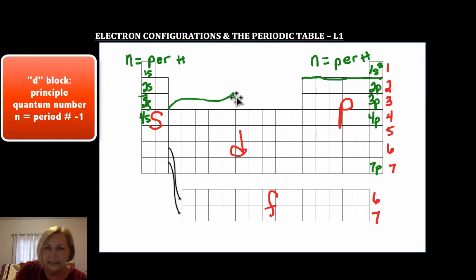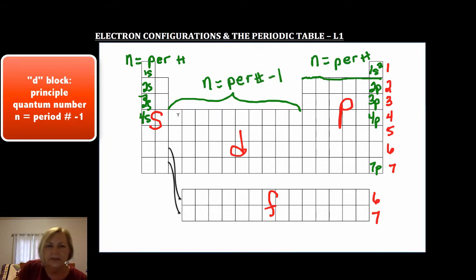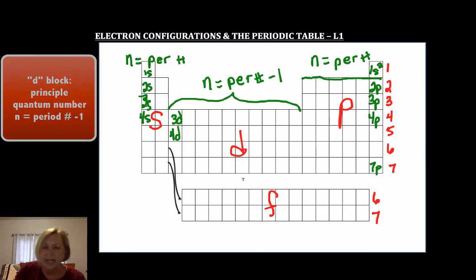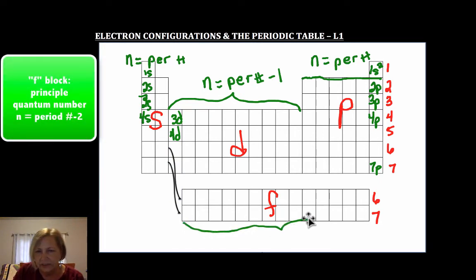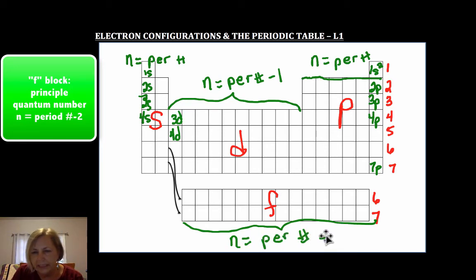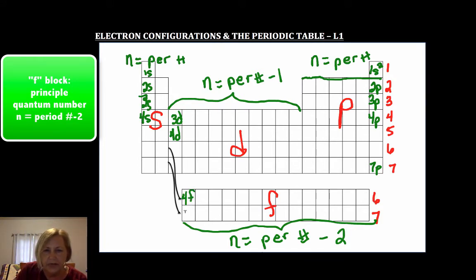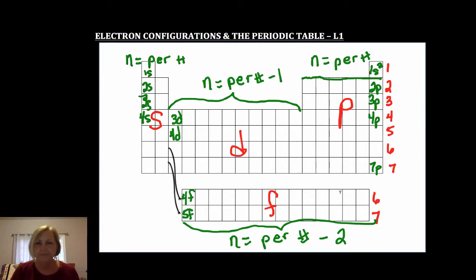For the D block, N is equal to the period number minus one. So this would be 3d because it's in the fourth period — go down by one. Fifth period go down by one for 4d, and so forth. For the F block, N is equal to the period number minus two. So the sixth period gives 4f, and the seventh gives 5f.